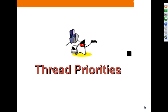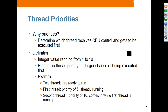Thread priorities: there are ten priorities in a thread, ranging from one to ten, representing how urgent a thread is supposed to run. The higher the priority number, the more important it is compared to a lower-numbered thread. For example, if two threads are ready to run and one has a priority of five and the other has a priority of ten, the one with priority ten will be considered as the next thread to run.